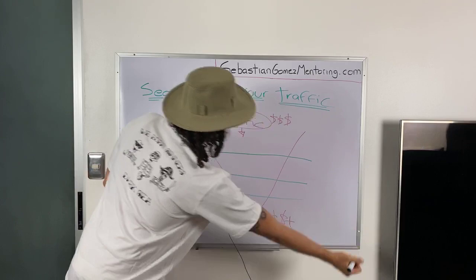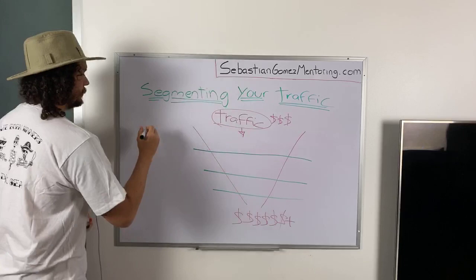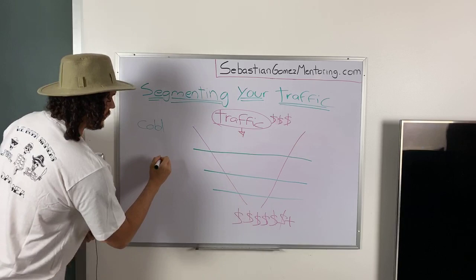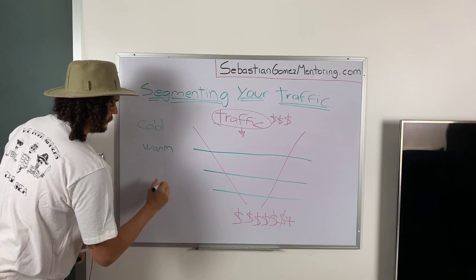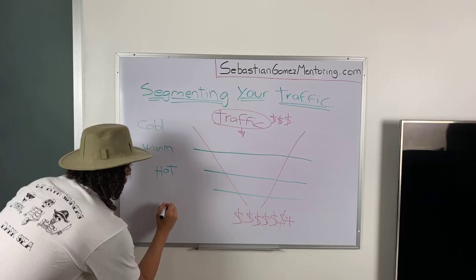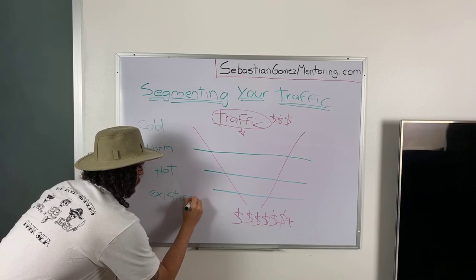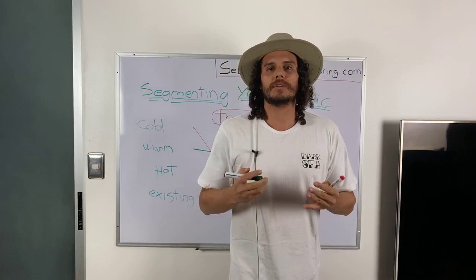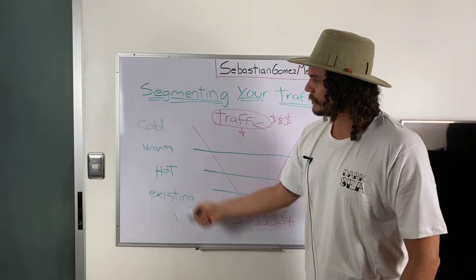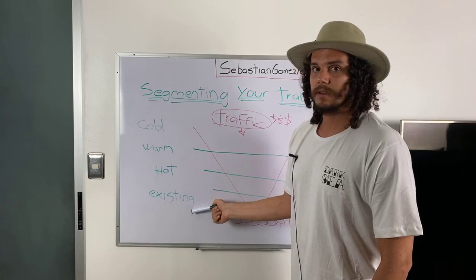The first layer is called cold traffic. The second one is called warm traffic. The third one is called hot traffic. And the last one — those are the existing customers. Those are the four steps from your traffic funnel that are always going to be present. This is a principle — principle-based targeting — and it's never going to change.